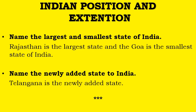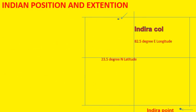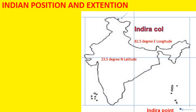Students, we have learned that the newly added state is Telangana. Also note that 82.5 degree East longitude is a vertical line which passes through Allahabad, and 23.5 degree North latitude — the Tropic of Cancer — passes through Gujarat, Madhya Pradesh, West Bengal, and Tripura.